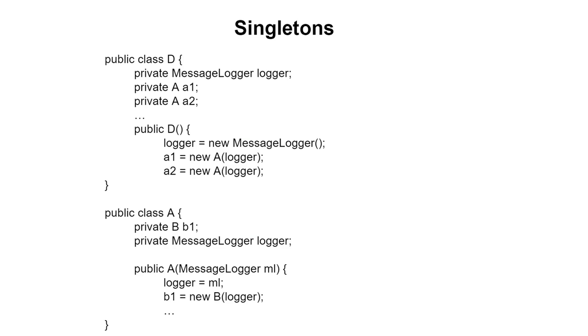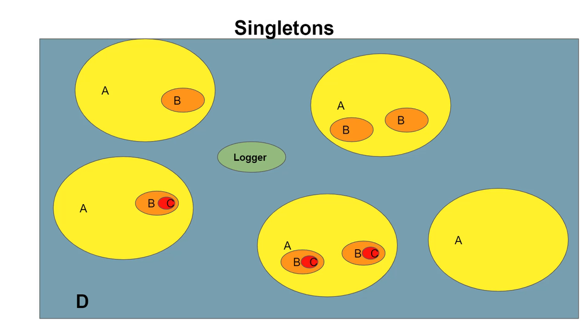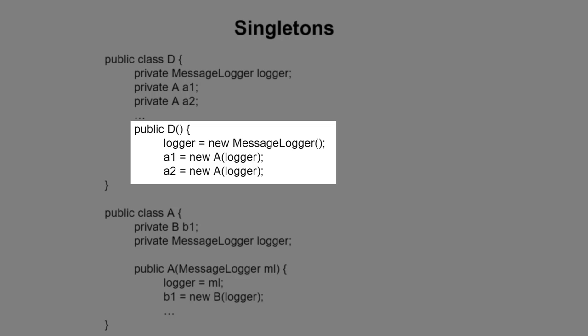Then we would need to pass a handle of the message logger to any objects that we contained. In this case, you can see that the blue objects directly contain the yellow objects of class A, and here when we create the class A objects we could pass the logger as an argument to the constructor for all the A objects.